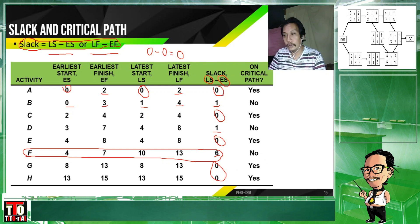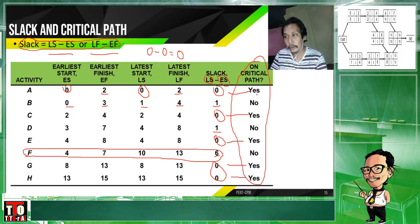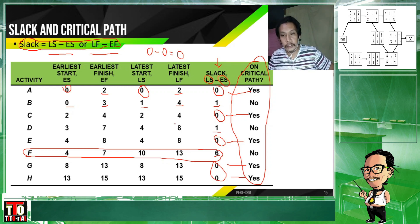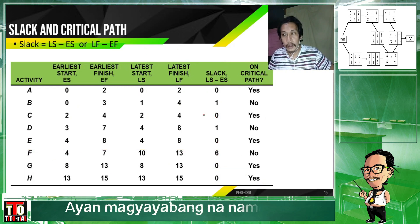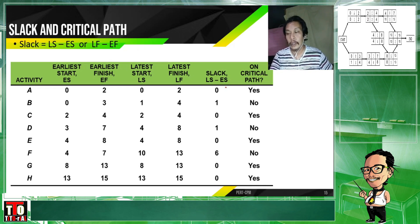Notice here that those with zero slack — yes, they are on the critical path. But those with non-zero slack values are not. However, don't be misled here. Before you answer whether an activity is on the critical path or not, I suggest you solve the slack values first. There is also an easier way to determine the slack value and which ones are critical activities directly from the network, without needing this table.